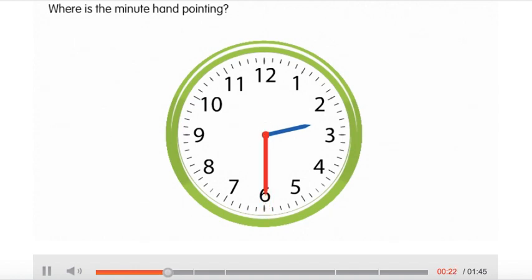Where is the minute hand pointing? The minute hand is on 6. What does this show? You can say it is 30 minutes or half past the hour.